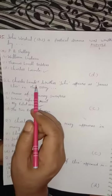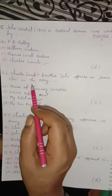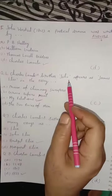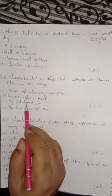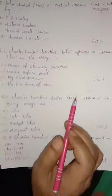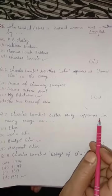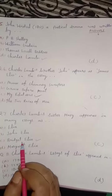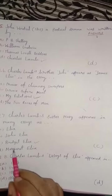Question 6. Charles Lamb's brother John appears in the essay as 'James Elia.' So Charles Lamb's brother John — his name is James Elia in the essay. Option C is correct — 'My Relations.' Question 7. Charles Lamb's sister Mary appears in many essays as option C — 'Bridget Elia.' In some essays she is mentioned as 'Cousin Bridget.' Option C is correct.